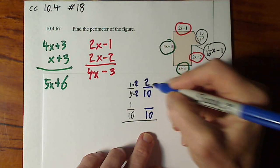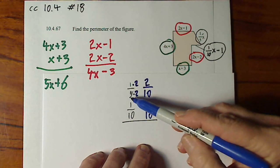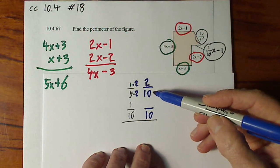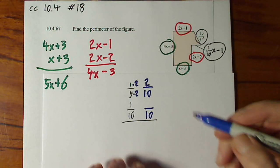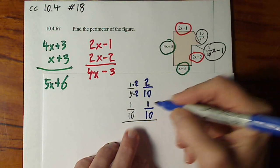This way, right here 2 tenths, I have not changed the value of 1 fifth. I'm just changing the way it looks. But it's the same amount of stuff. This was already a denominator of 10, so we're simply keeping that numerator.